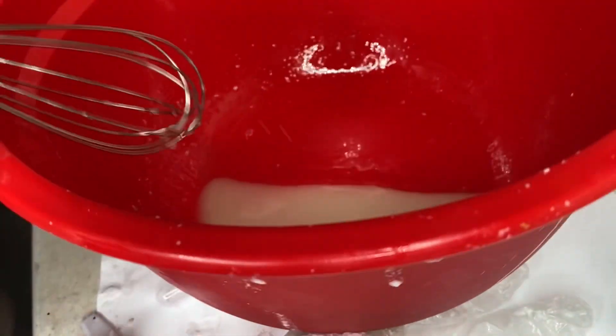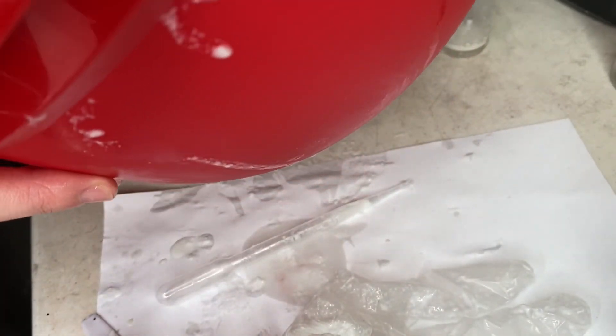Right here I am just mixing the oils and the emulsifying wax together as soon as I got it out of the microwave. And then now I'm going to add in water. It can be room temperature or cold water, whatever, it doesn't matter.